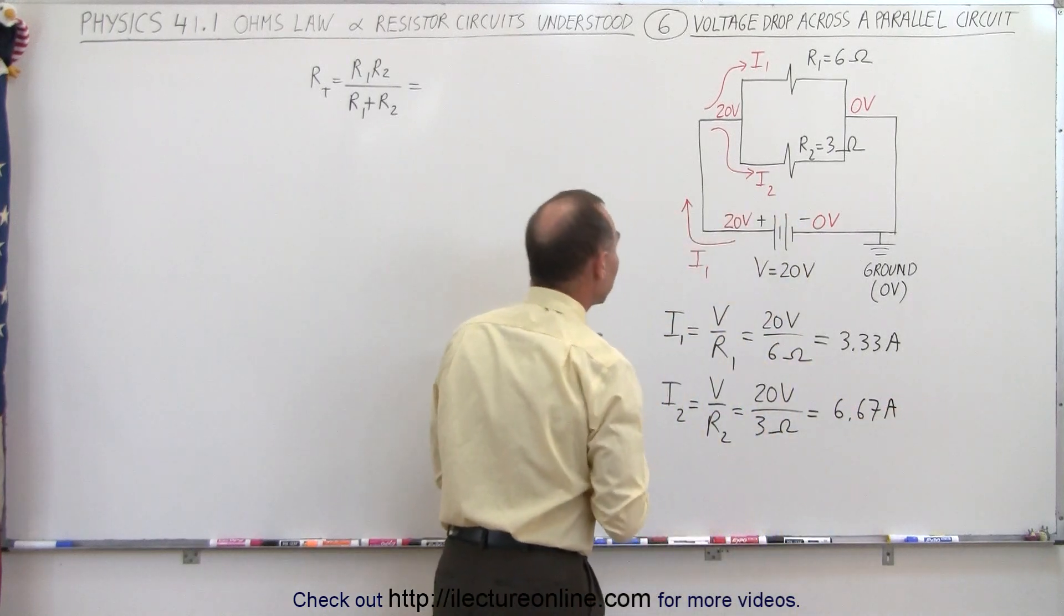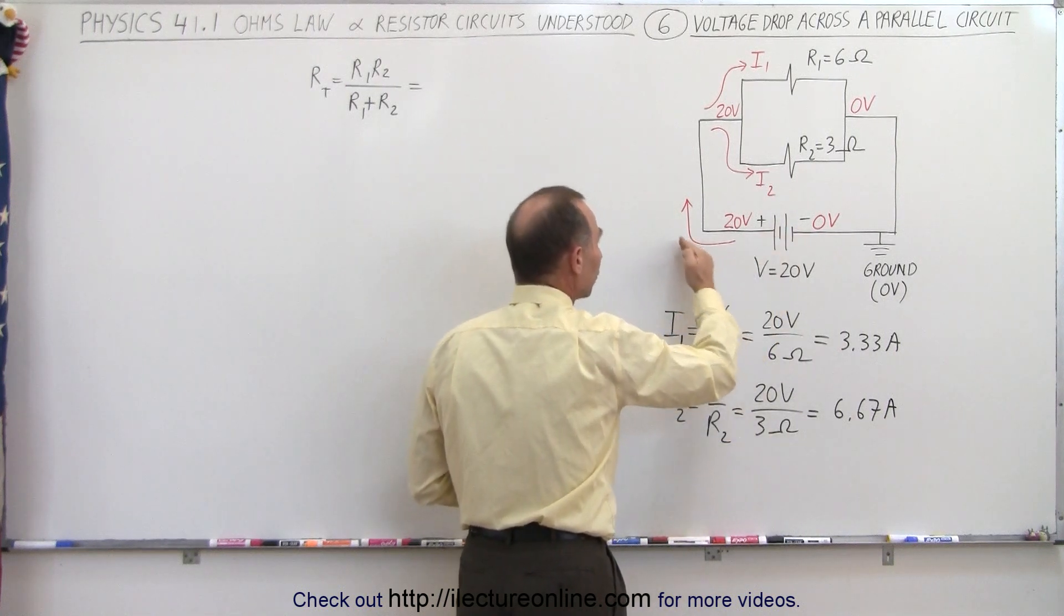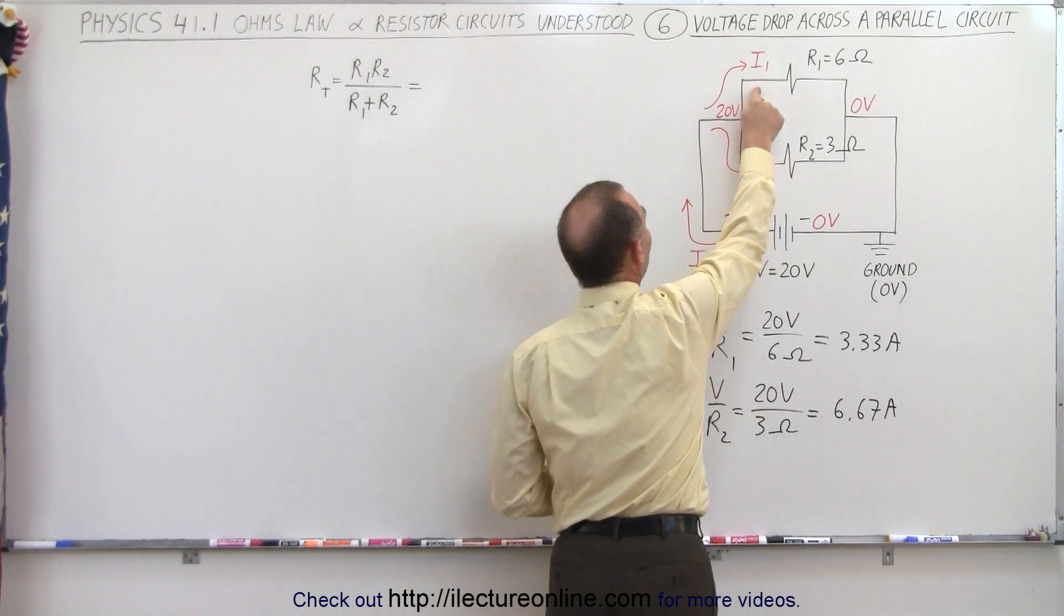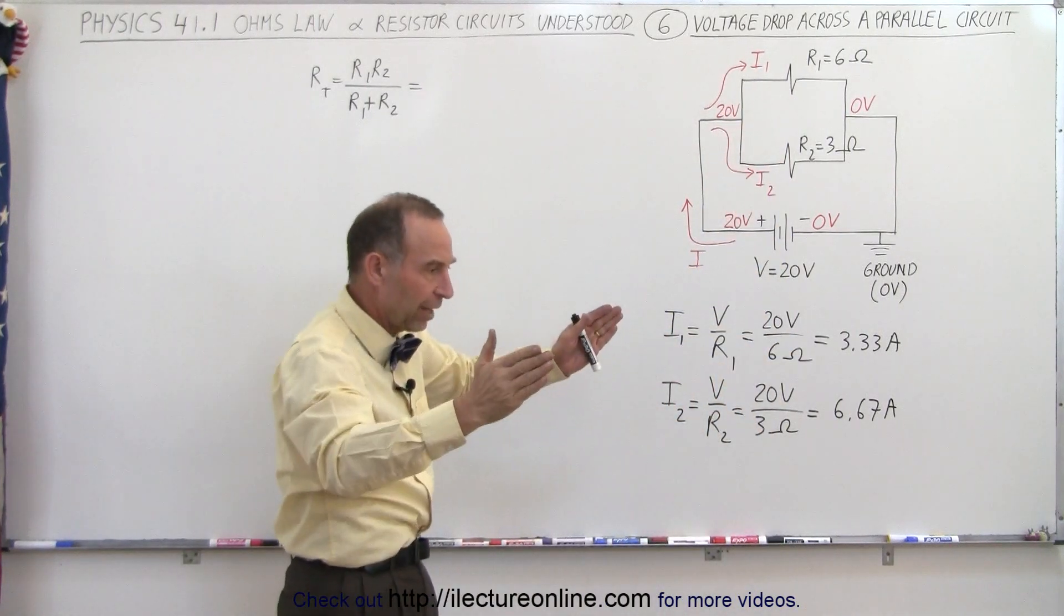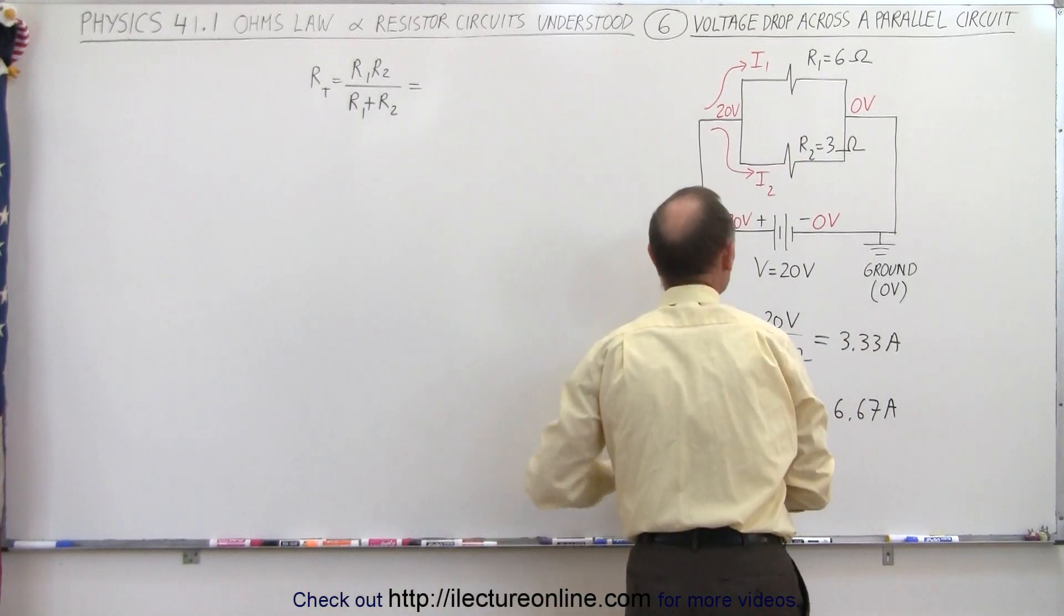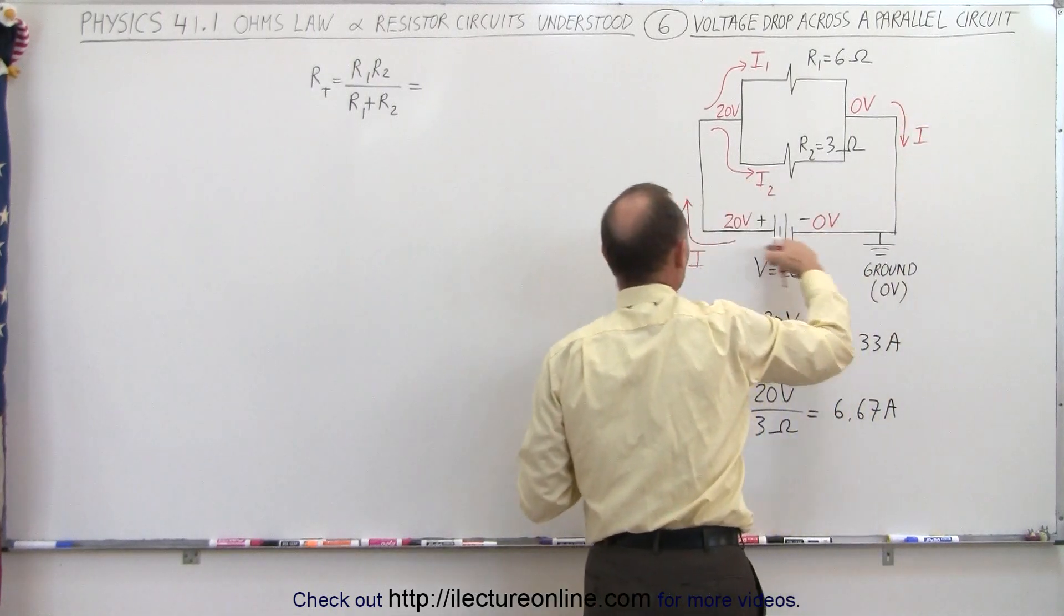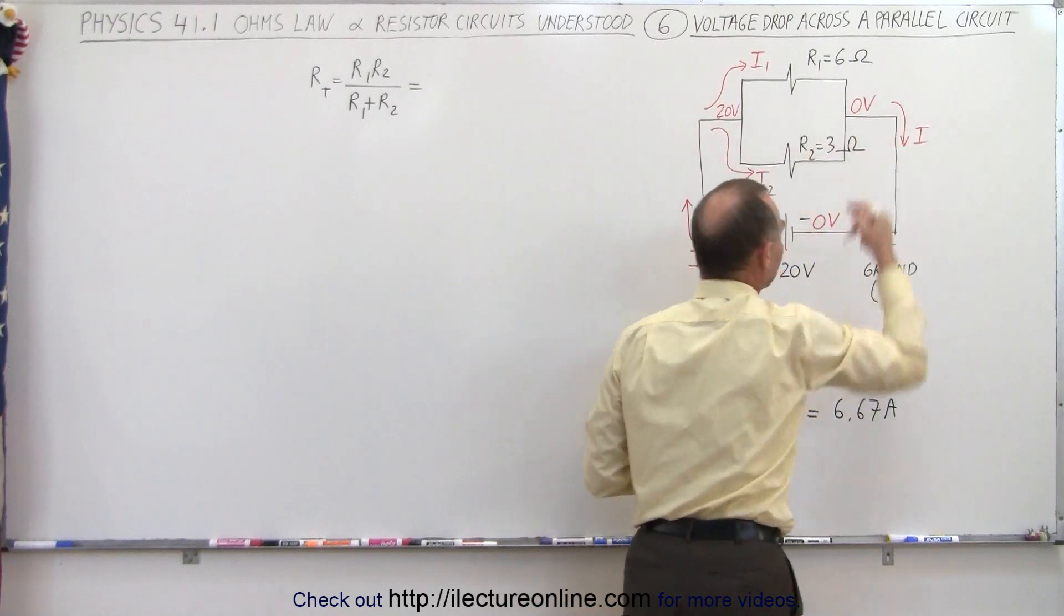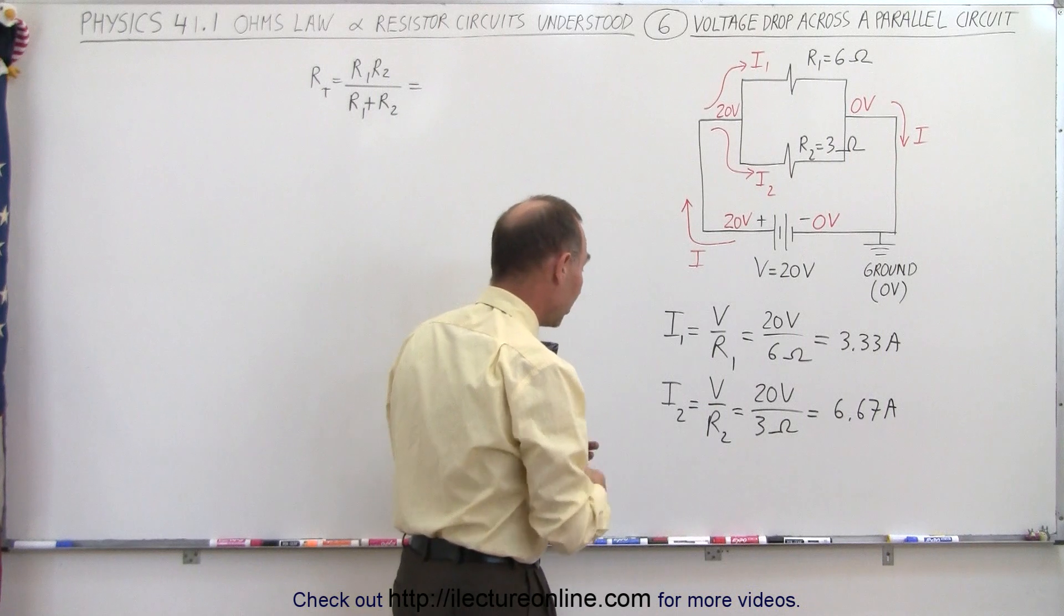So here we can see that the total current, and this should not be I1, this should simply be I. The total current I to the circuit is going to be equal to the sum of I1 plus I2. In other words, I splits up into two currents, and then the two currents come back together on the other side, and they turn back into the current I on the other side of the parallel branch. So we have current I going to this part of the circuit, I1 to the top, I2 to the bottom, and then come back to I, which means that the current I must be equal to the sum of the two.